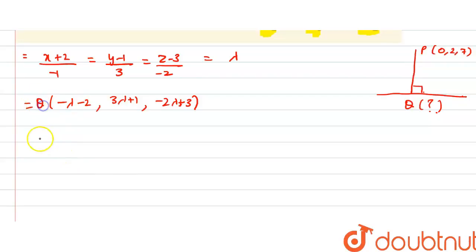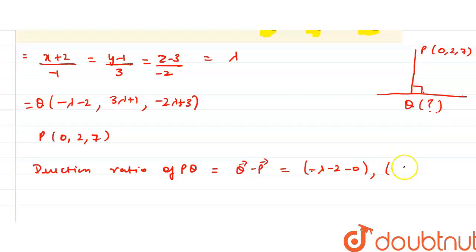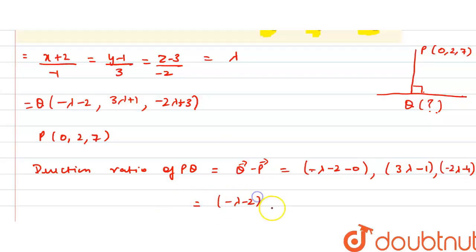Point P is (0, 2, 7). The direction ratios of PQ equal Q minus P: that is (minus lambda minus 2 minus 0), (3 lambda plus 1 minus 2), and (minus 2 lambda plus 3 minus 7), which gives us (minus lambda minus 2), (3 lambda minus 1), (minus 2 lambda minus 4).